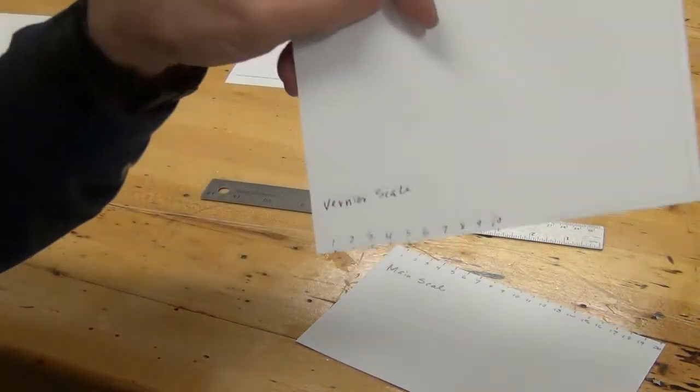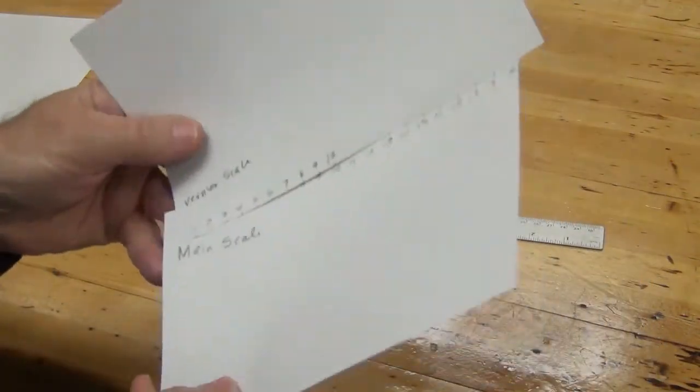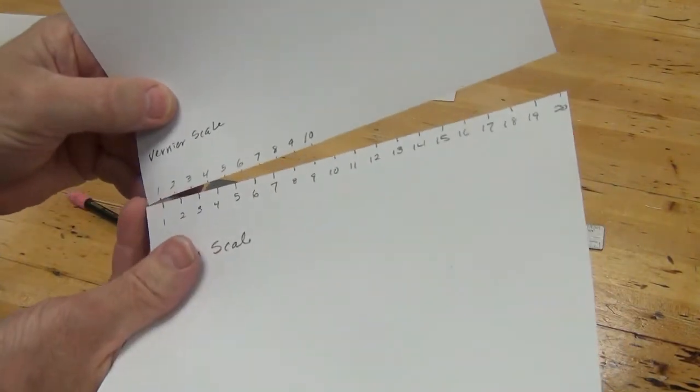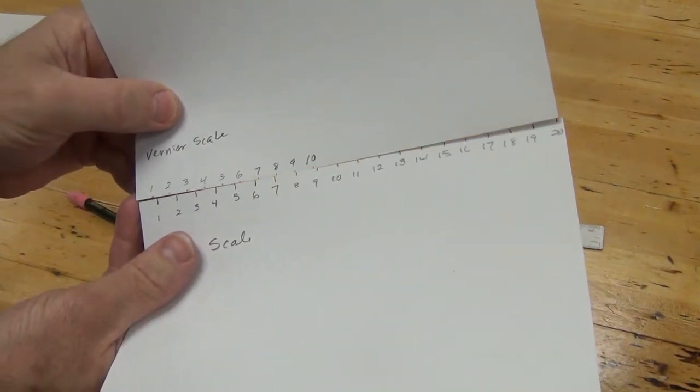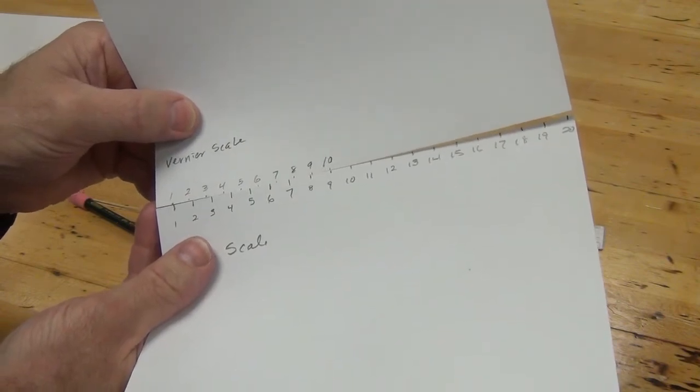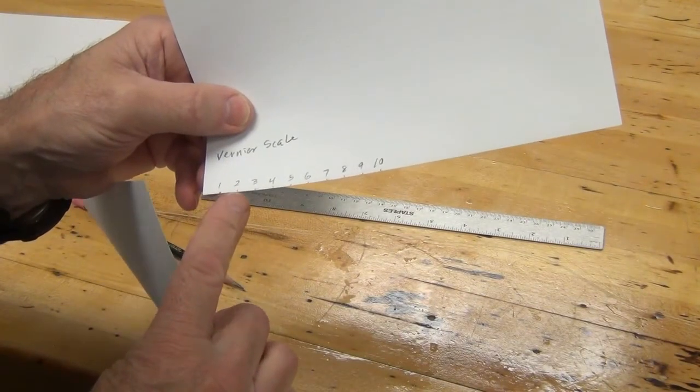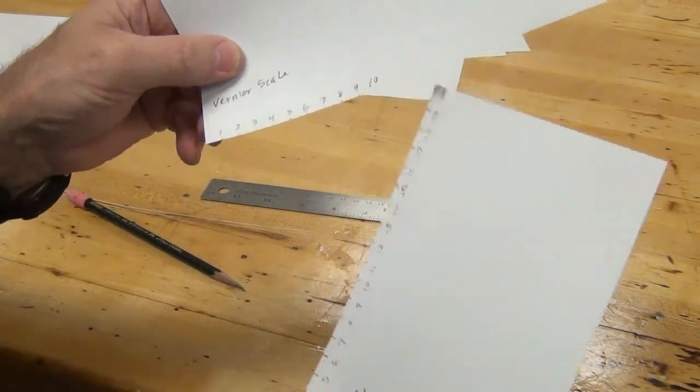Good then on this one I am measuring my vernier scale and as it tells me in the instructions the size of these marks is the distance between these marks.